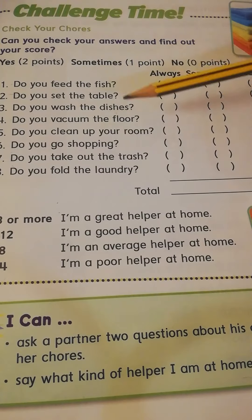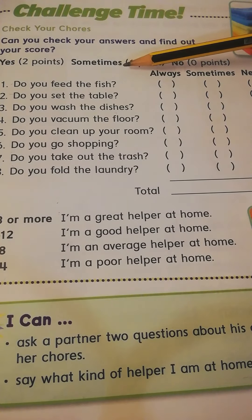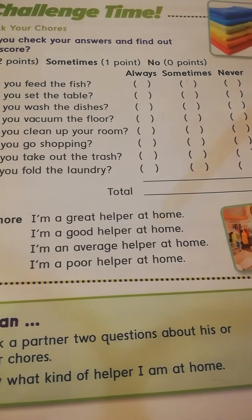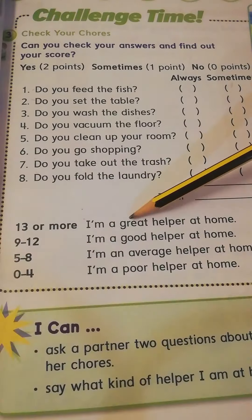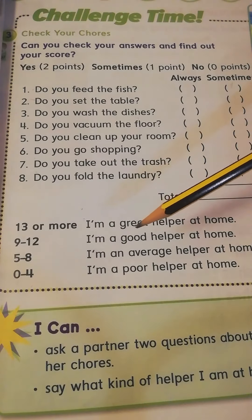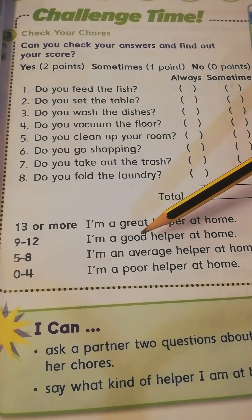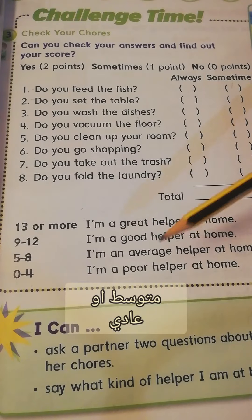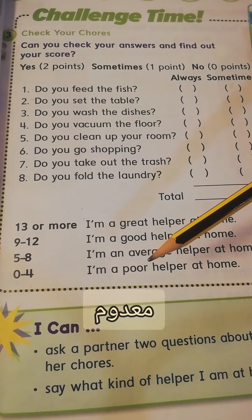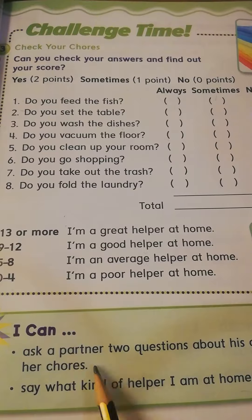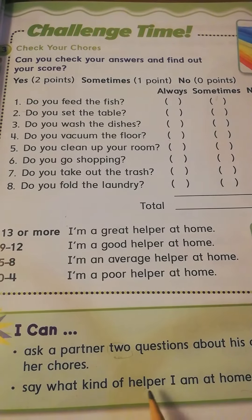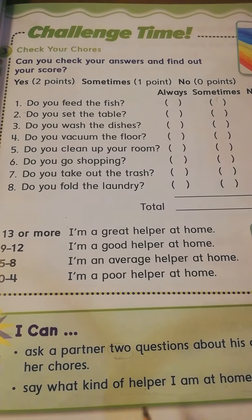Now add up your score. إذا yes تحط نقطة. Sometimes يعني أحياناً — نصف نقطة. No يعني never — تكتب صفر. إذا من 13 and more: I am a great helper at home. من 9 لـ 12: I am a good helper. من 5 لـ 8: يعني نص نص. من zero لـ 4: poor helper، يعني ما تساعد أبداً. Ask your partner two questions about his or her chores. Say what kind of helper I am at home.